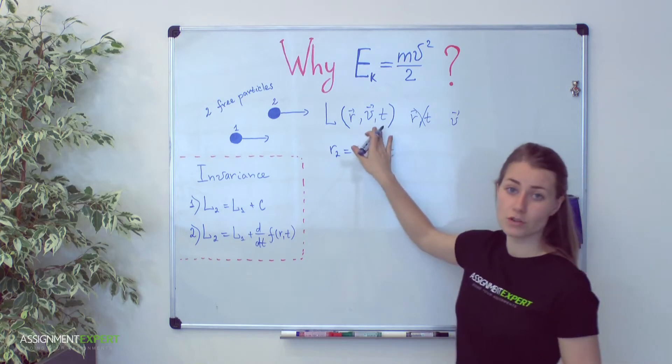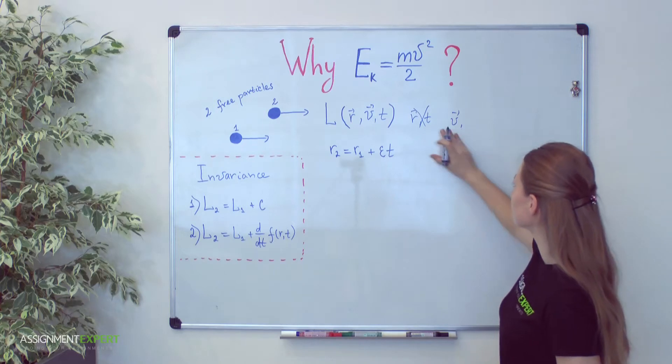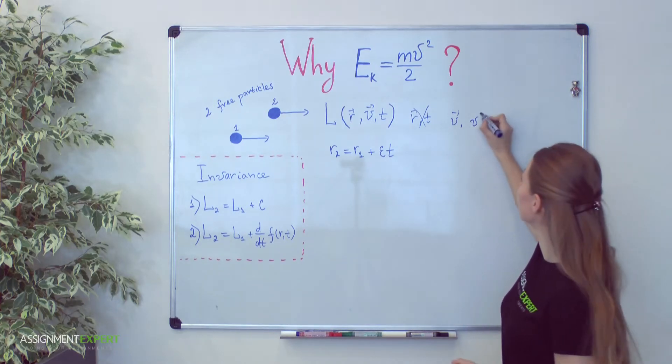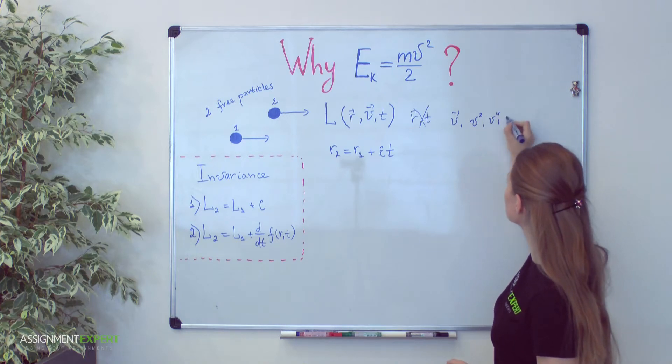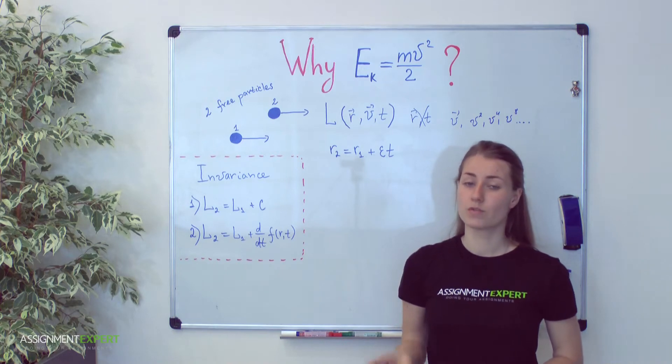Next, because of isotropy of our space Lagrange function cannot depend on direction of velocity but can depend on the absolute value of it, say on the second, fourth, eighth power, etc. Now let's find out which power works for physics.